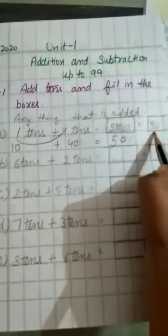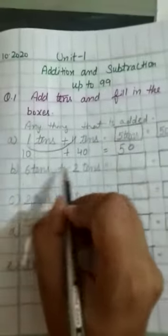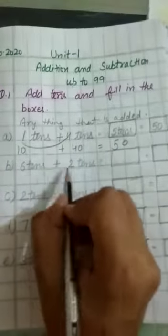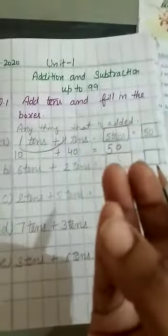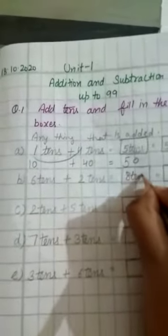Clear students? Now next sum — six tans plus two tans. Ab aap six aur two ko add karo. Six plus two: put six in your mind and then count two — seven, eight. The right answer is eight tans. Ab eight tans ki value kya hogi? Six tans is sixty, plus two tans is twenty — sixty plus twenty equals eighty. Then the right answer is eighty.